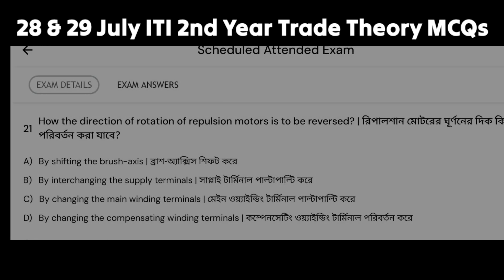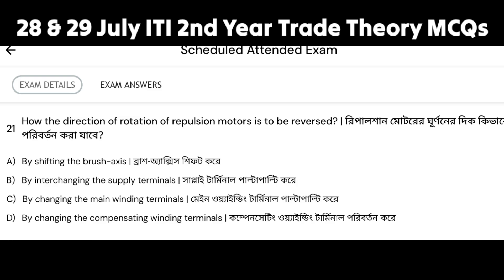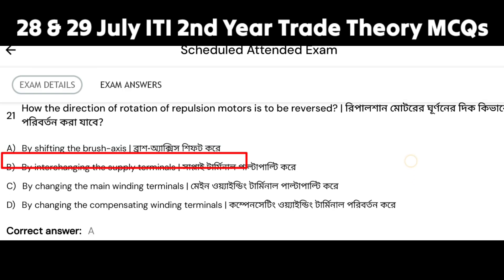How is the direction of rotation of a repulsion motor reversed? The direction of the repulsion motor is reversed by shifting the brush axis. Option A, by shifting the brush axis, is the correct answer.